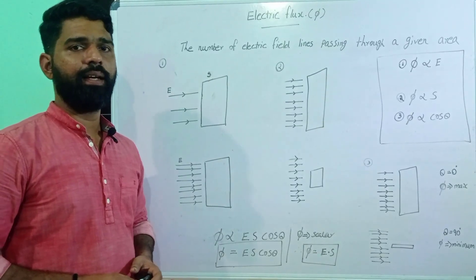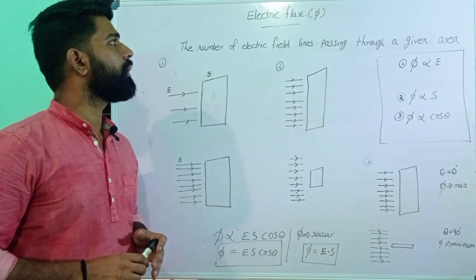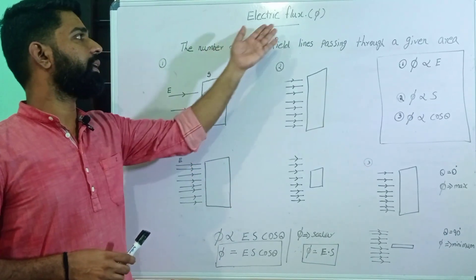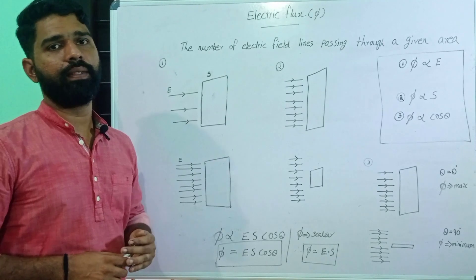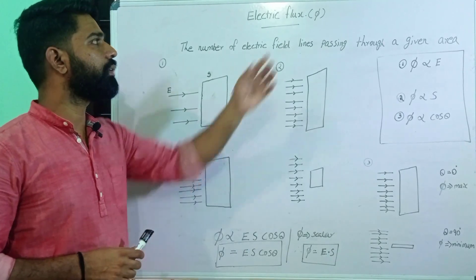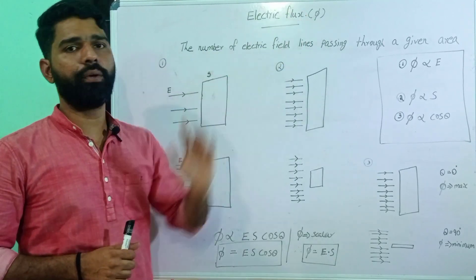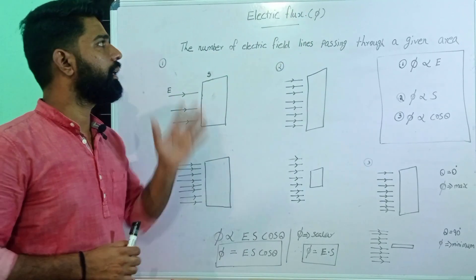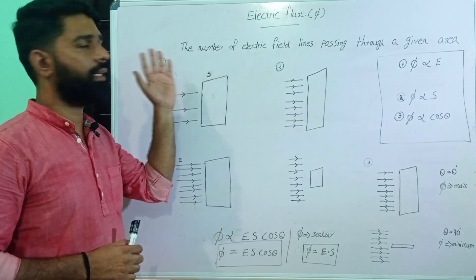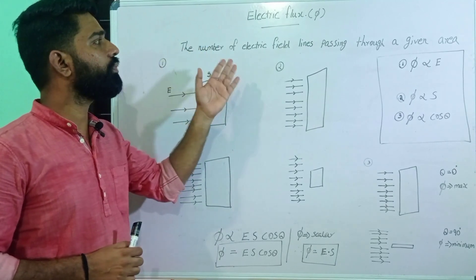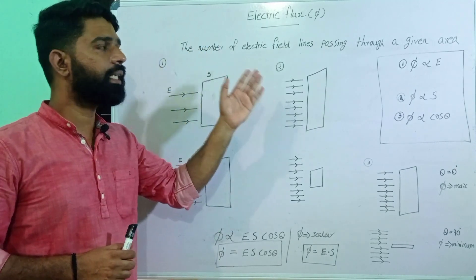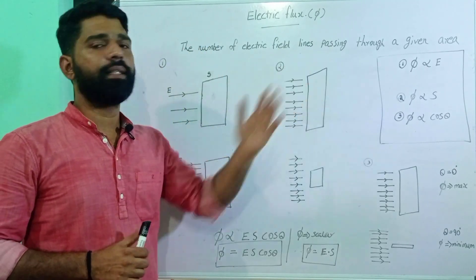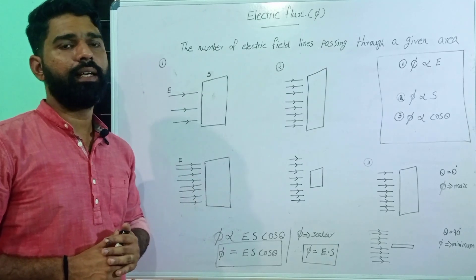Now, let's discuss electric flux. Electric flux is number 5. What is the meaning of electric flux? Electric flux is the number of electric field lines passing through a given area.